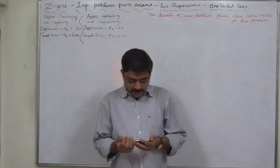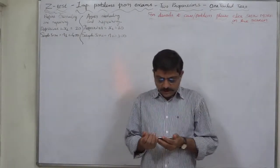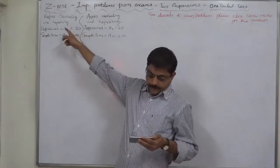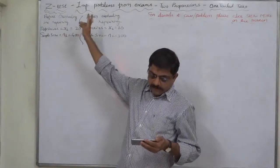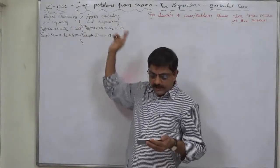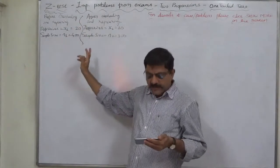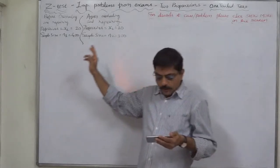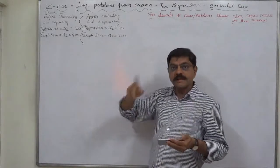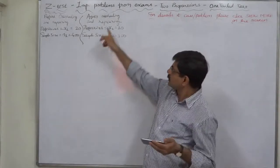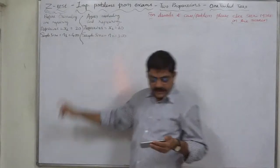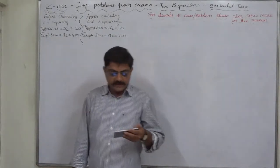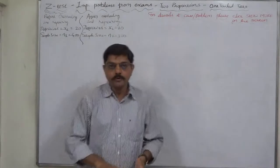The problem: a machine produces 20 defective articles in a batch of 400. After overhauling and repairing, the same machine produced 10 defective articles in a batch of 300. Has the machine improved?